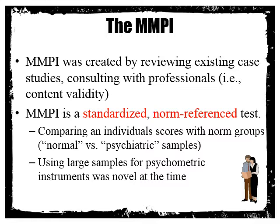The MMPI involved comparing individual scores with norm groups and determining from those groups what was normal and what was deviant or abnormal. It was the first psychometric instrument to use large samples — about a thousand people were surveyed in the first MMPI, which was unusual at the time. It was really the beginning of major psychometric approaches to personality assessment in the United States and the world.